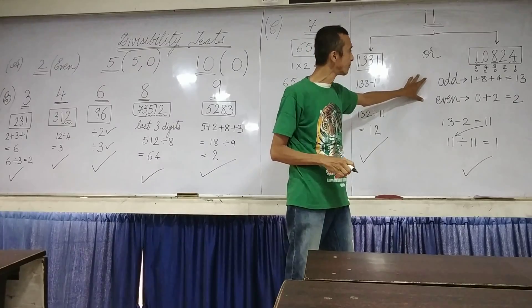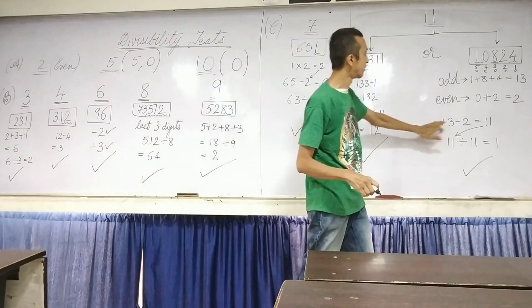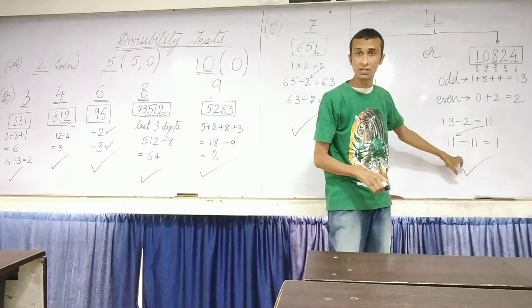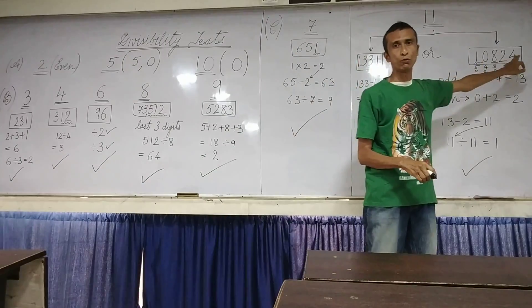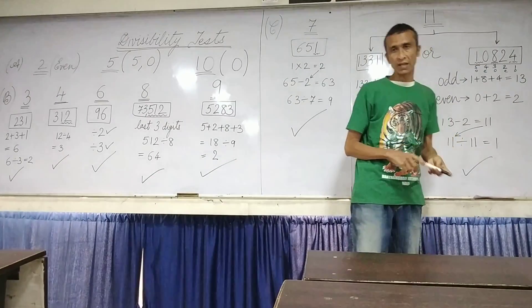So here we got 13 and 2. Now we subtract the odd, the even one from the odd. Here we get 11. That 11 is divisible by 11. In this case, yeah, it is. So 10824 is also divisible by 11. Thank you so much.